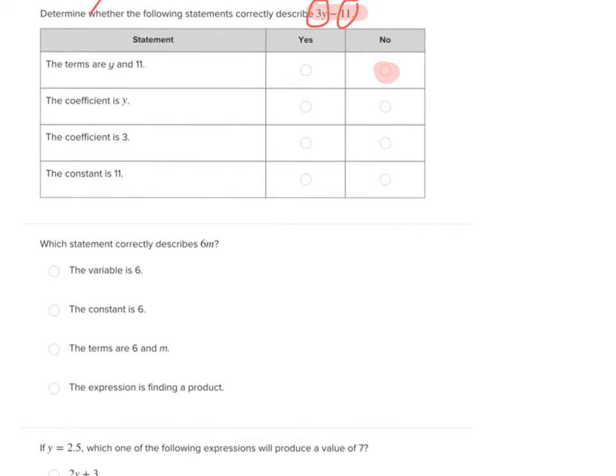Let's look at the next one. The coefficient is y. The coefficient's a number, not a variable. So that is also no. Let's look at the next one. The coefficient is 3. Is 3 the number that's multiplying a variable? Yes, indeed. That's a yes. The constant is 11. Is the 11 by itself? Yes, indeed. So those are your two answers.